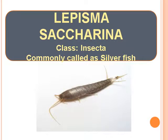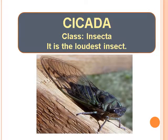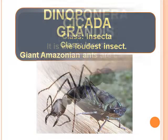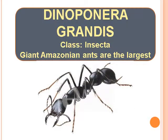Lepisma Saccharina — Class Insecta, commonly called as Silverfish. Cicada — Class Insecta, it is the loudest insect. Dinoponera Grandis — Class Insecta — Giant Amazonian Ants are the largest ants.